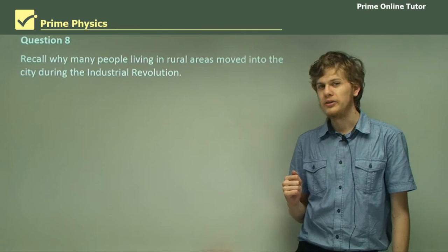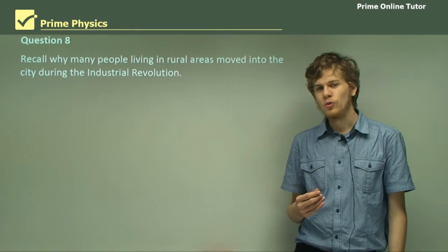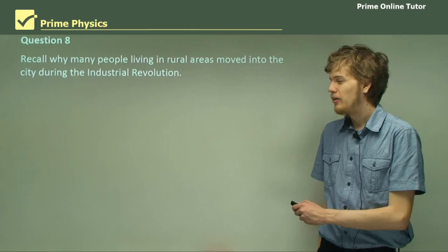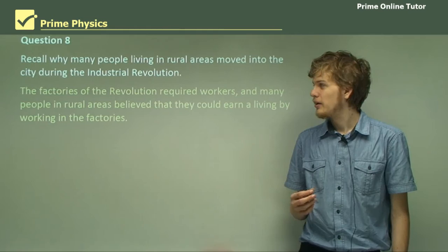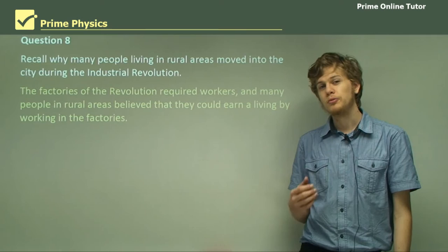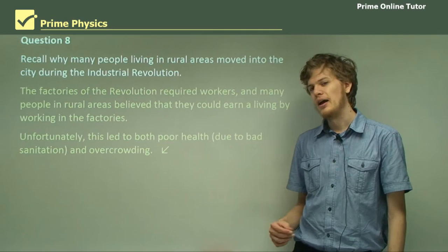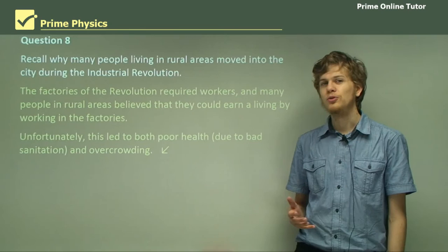Question eight: recall why many people living in rural areas moved to the city during the Industrial Revolution. This isn't strictly a science question, but it's important to know the history — both because it lets us know where we're going with our technology, and because it will probably be on the exam. The factories of the Industrial Revolution required many workers as well as a lot of steam power. The opportunity to work and earn money attracted people from rural areas to come and work in the factories. Unfortunately, this led to poor health conditions and overcrowding, due to the large amounts of pollution produced by the steam engines and the large numbers of people all in the same place.